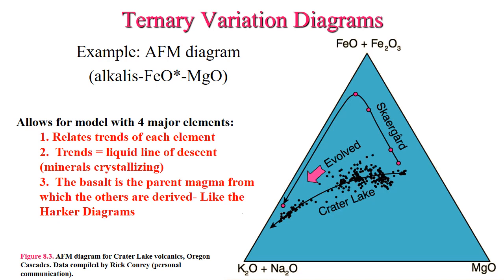A secondary way of describing geochemical data for major elements is the ternary variation diagram. The example shown here is the AFM diagram, standing for alkalis, iron, and magnesium. Like the Harker diagrams, it allows us to model different elements in relation to one another and pull out trends equal to liquid lines of descent, minerals that are crystallizing, and basalt as the parent magma. The AFM diagram compares four different major elements — with alkalis including sodium and potassium, iron including Fe²⁺ and Fe³⁺, and magnesium at the corners — without having to discard major information.